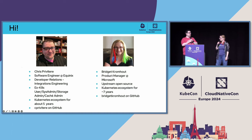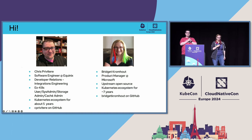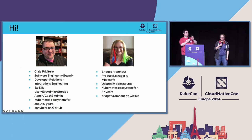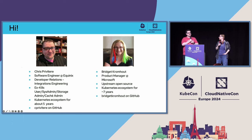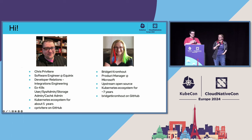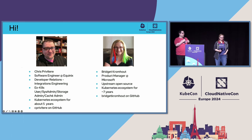I'm Chris Privetier. I'm a software engineer over at Equinix. I work in the developer relations section, doing integrations engineering, hooking up Kubernetes and other things to our APIs. I'm an ex-Kates user — I've done sysadmin, done storage. Been in the Kates ecosystem for about five years.